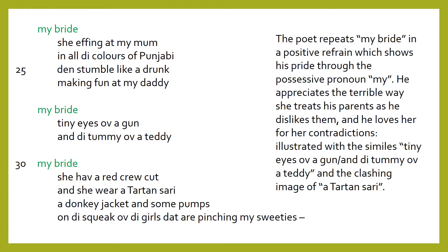The poet repeats 'my bride' in a positive refrain which shows his pride through the possessive pronoun 'my.' He appreciates the way she treats his parents as he dislikes them, and he loves her for her contradictions, illustrated with the similes 'tiny eyes of a gun' and 'de tummy of a teddy,' and the clashing image of a tartan sari.